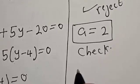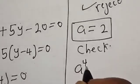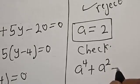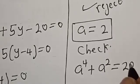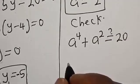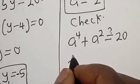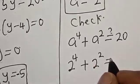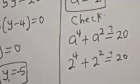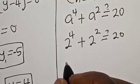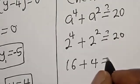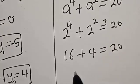Check. We have the given equation: a raised to the power 4 plus a square must be equal to 20. Let's see. Now a is 2. 2 raised to the power 4 plus 2 squared, let's see if equal to 20. 2 raised to power 4 is 16 plus 2 squared is 4 is equal to 20, meaning that the left hand side is equal to the right hand side.